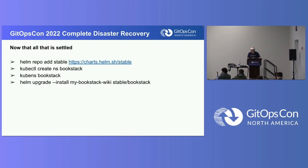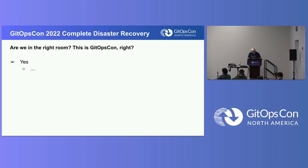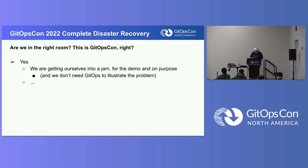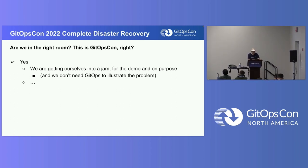So we're going to do a Helm install now, the old-fashioned way. Yes, this is GitOpsCon, but before too long we will get to GitOps. We don't need GitOps to have this problem — we're trying to get ourselves into a jam. We don't need GitOps to illustrate the problem. But it's part of our ideal solution later.